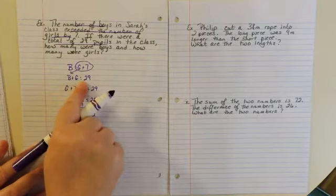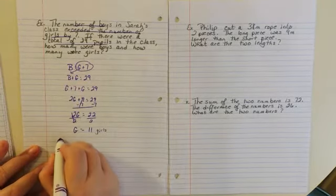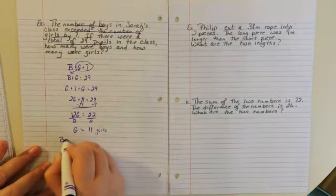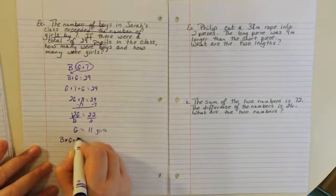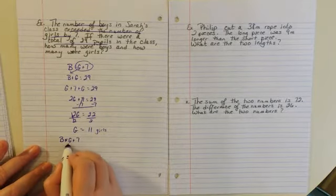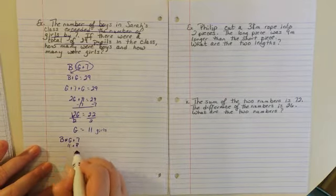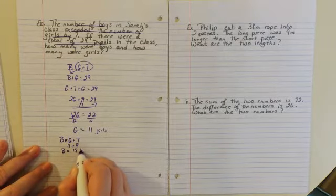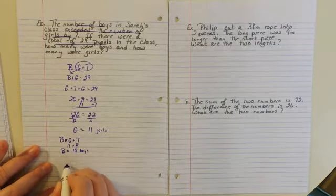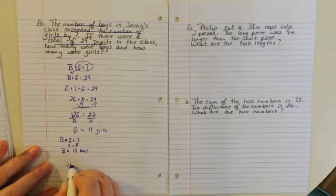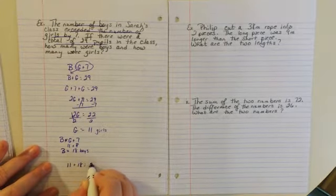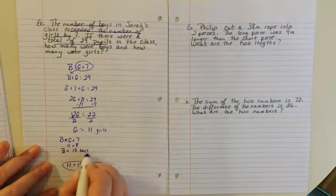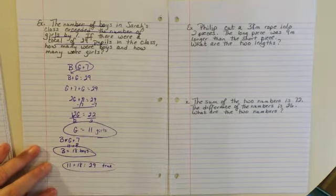So there are 11 girls. If there are 11 girls, we substitute into boys equals girls plus seven: 11 plus seven, so the boys equal 18. Our check is 11 plus 18 should equal 29, and it does. So here are your answers.